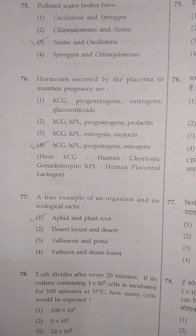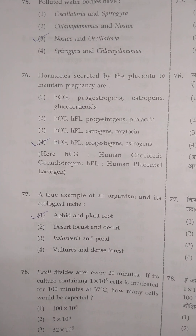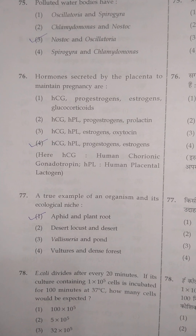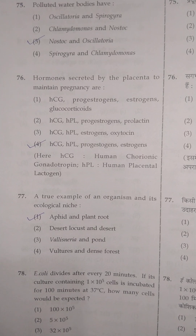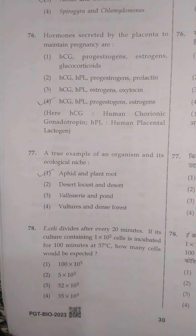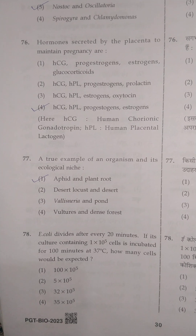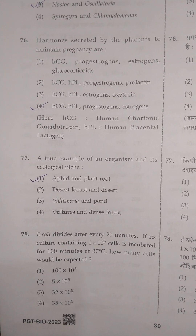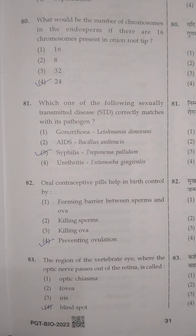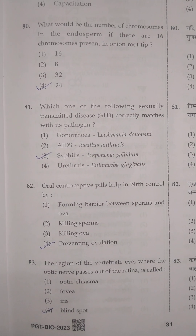The next question: hormones secreted by the placenta to maintain pregnancy — option 4 is correct: hCG, hPL, progesterone, and estrogens. The next question: a true example of an organism and its ecological niche is a bee and plant root — option 1 is correct.